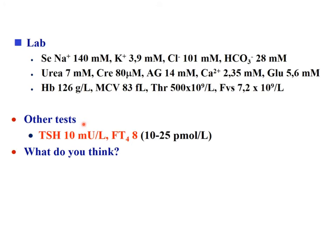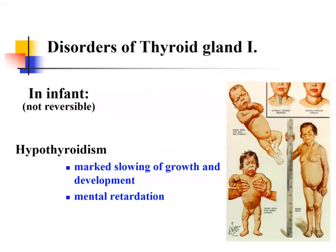Clinical signs of hypothyroidism vary by age. In infants, thyroid hormones are critical for growth and neural development, so thyroid function is checked right after delivery to prevent cretinism. Cretinism is irreversible if untreated, but if thyroid hormone substitution is started immediately after delivery, it won't develop — and substitution must be continued forever. If untreated, the result is slow growth, developmental delay, and mental retardation.